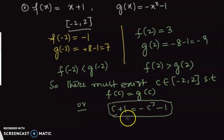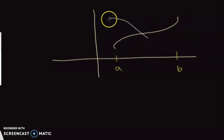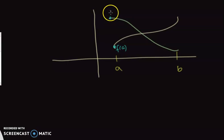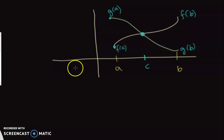To elaborate graphically: you have the interval [a, b] and two functions f and g. You can see that f(a) is less than g(a), and g(b) is less than f(b). So there must be a value c where these two functions are equal — that is what is going on. This guarantees the intersection of the two graphs.